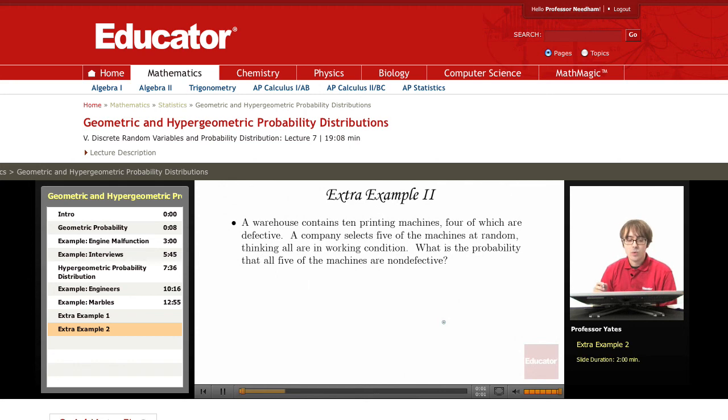Our second example: we have a warehouse contains 10 printing machines, four of which are defective. A company selects five of the machines at random, thinking all are in working condition. What is the probability that all five of the machines are non-defective?